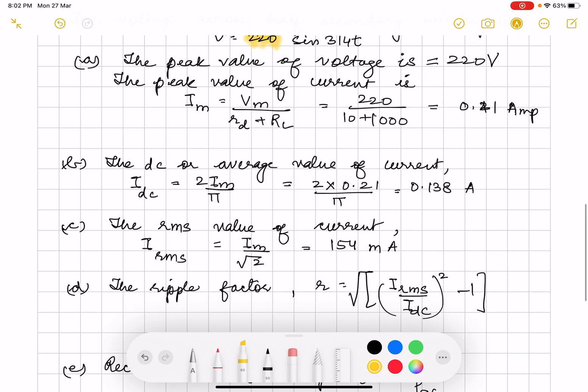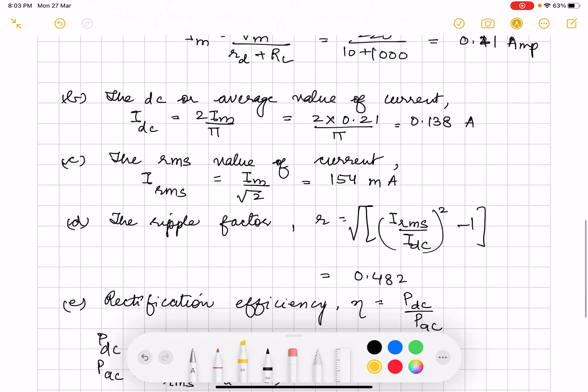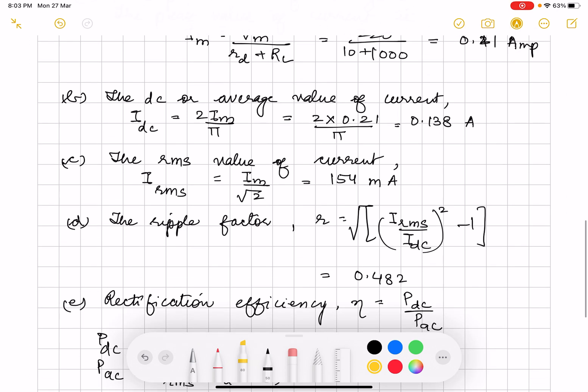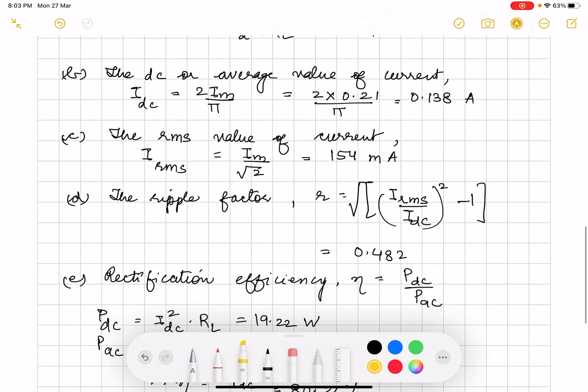Ripple factor ka equation hota hai: I RMS by IDC square minus 1, the whole under root. This we have already done. So you have to just put the values. You will get 0.482 and rectification efficiency is power DC by power AC.